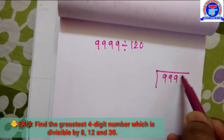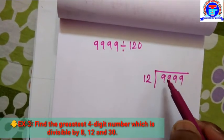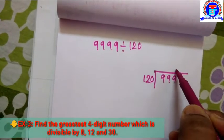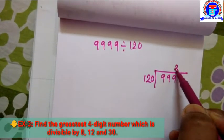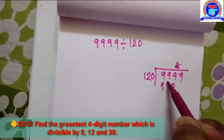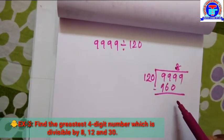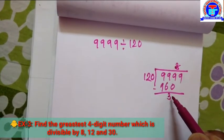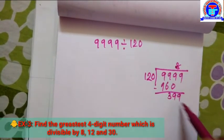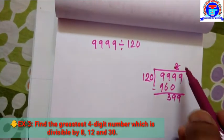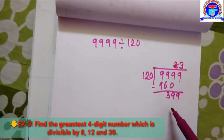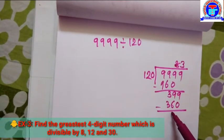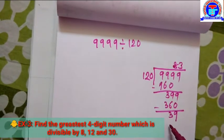9,999 divided by 120: we take 83. That gives 9,960, with a remainder. Subtracting gives 399. We then take 3, giving 360. Subtracting gives a remainder of 39.